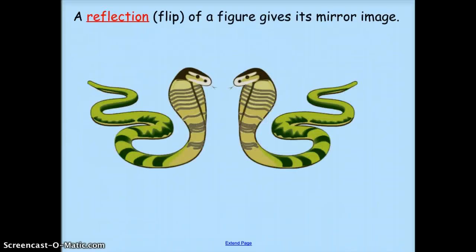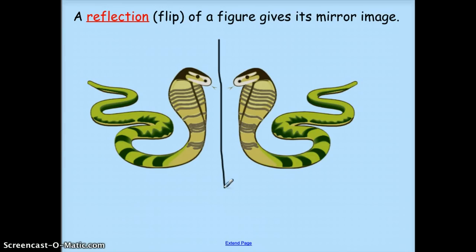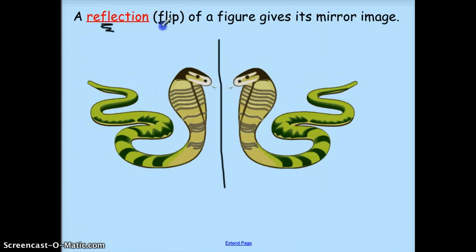Now we're going to look at what a reflection is. A reflection is a flip of a figure that gives its mirror image. You can see that if there was a line right here, these snakes were just flipped across that line. There's a clue: FL in reflection and FL in flip. So a reflection is a flip.